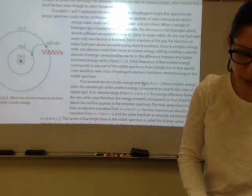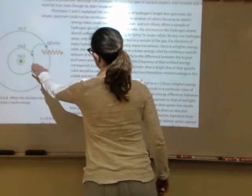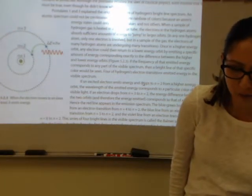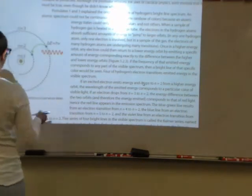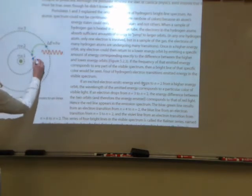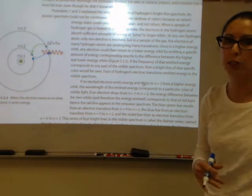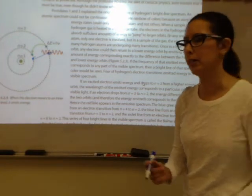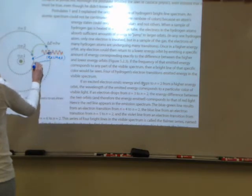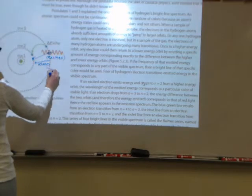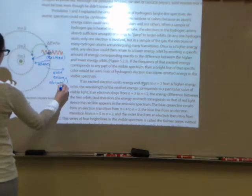An atomic spectrum can't be continuous — it can't have a complete rainbow of colors — because these energy states can only have certain values. When we heat a gas, the electrons absorb energy and jump to a higher level. For instance, an electron at N equals two can jump to the N equals three level, and the amount of energy absorbed will be emitted when it relaxes back down — you will see that as a band of color.